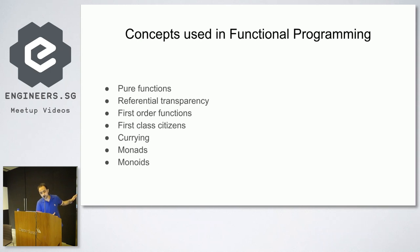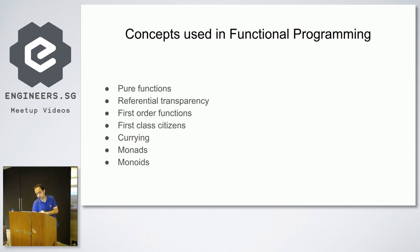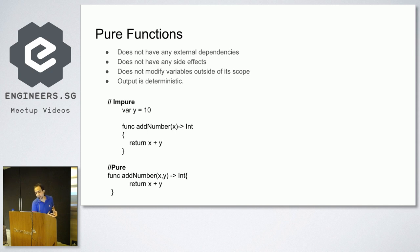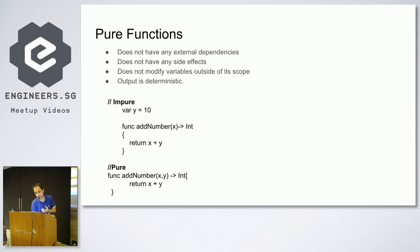I'll go through some of the basic concepts: pure functions, referential transparency, first-order functions, and currying. Pure functions mean your function does not have any external dependencies and does not have any side effects. If you have a function that takes an input and gives you an output with some computation inside, your function cannot change any external state or variables defined outside of scope, nor can it be affected by any external state.